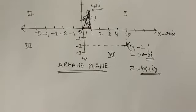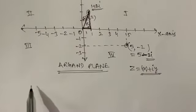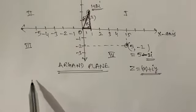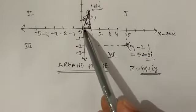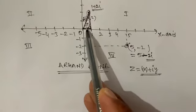Now for polar representation, to represent a complex number in polar form we need two things: first, the distance from the origin — that is r — and second, the angle it makes — that is theta.